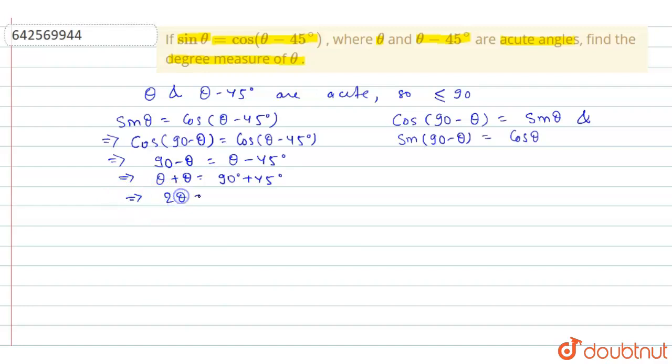This implies 2 theta is equal to 135 degree and theta is equal to 135 degree by 2 which is equal to 67.5 degree.